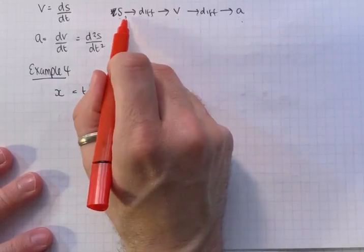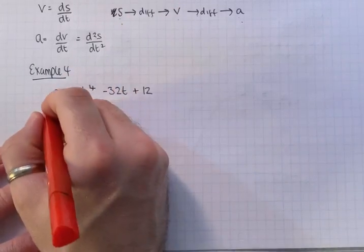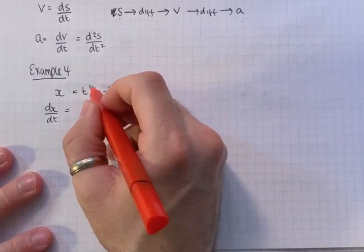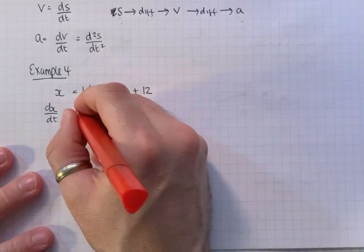So remember this is s. So if we differentiate it, we get velocity. So if we differentiate it dx/dt. Remember how we differentiate: times by the power, reduce the power by 1.